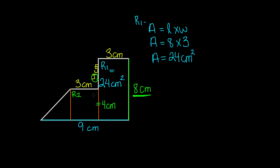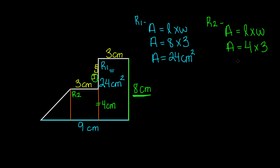Now let's find the area for rectangle number 2. The area is equal to length times the width. The length is 4 centimeters and the width is 3 centimeters. So when we multiply 4 by 3, we get 12 centimeters squared. So the area for rectangle number 2 is 12 centimeters squared.